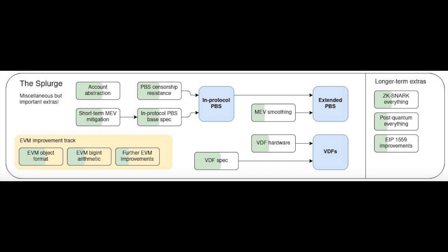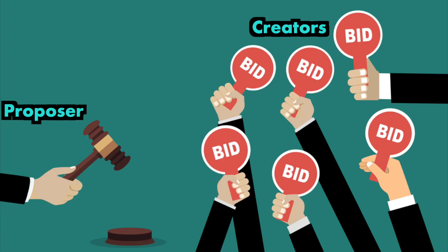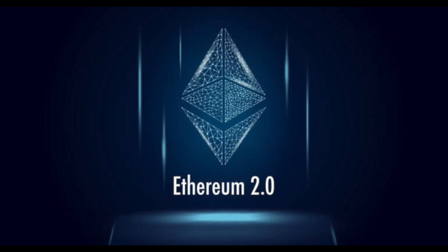Another feature coming from the splurge is PBS or proposer builder separation. Currently, people who propose a new block to the chain also must create it to gain a reward. This new system would allow people to propose a block and then let separate block creators do an auction-like system to see who would create it. This will simplify the use of Ethereum and make it more accessible to everyday users. It will also allow block creators to focus on one thing and do it more efficiently.